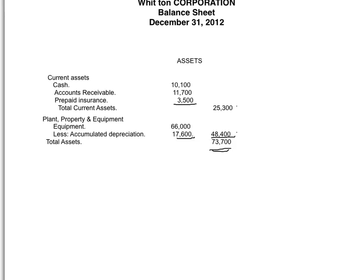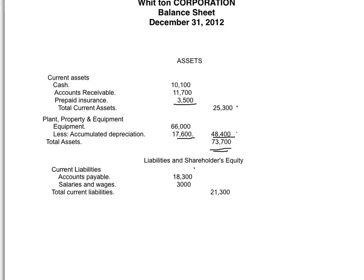We now look at the liabilities and shareholders' equity section. For current liabilities there are two: accounts payable $18,300 and salaries and wages $3,000. I total those two and current liabilities are $21,300. There are no long-term liabilities, so the shareholders' equity section would be completed next.